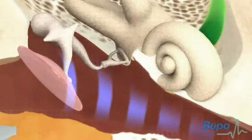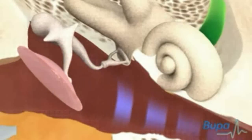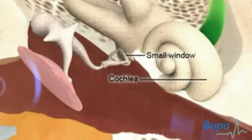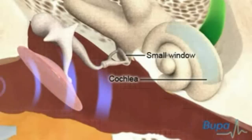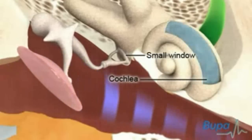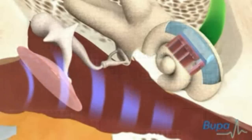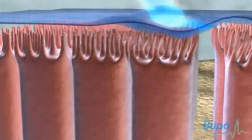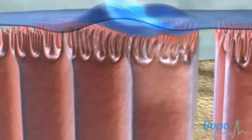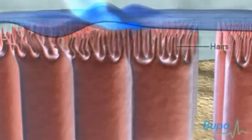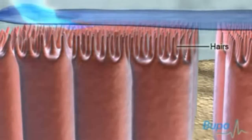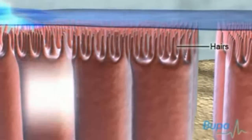The vibrations from the ossicles pass through a small window and into a part of the inner ear called the cochlea. Sound waves travel through the fluid of the cochlea and make the tiny hairs move. Here we show the hairs moving.